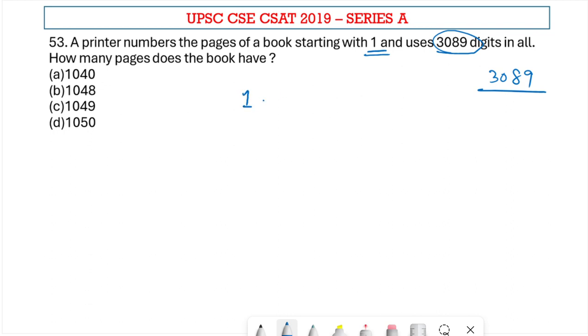So basically we know that from 1 to 9, the single digits, the printer would have printed 9 digits. That is 1, 2, 3, 4, 5, 6, 7, 8, 9.